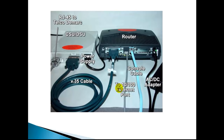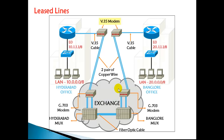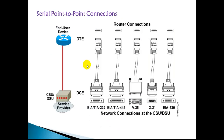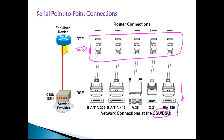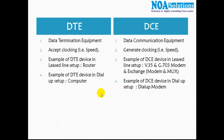In this leased line setup, there are plenty of devices involved — modems, MUX, and routers. Depending on the CSU/DSU modem type, different converters are used. One end connects to the router, and the other end uses either a 60-pin connector or a 26-pin connector. The next thing we need to understand is that in this setup there are two different kinds of devices: DTE and DCE.